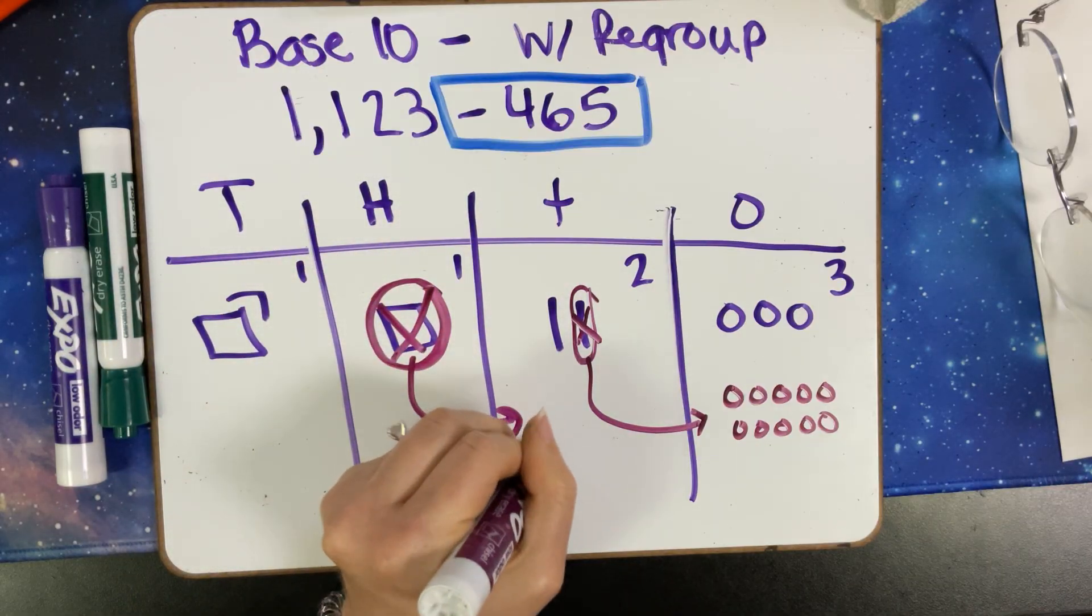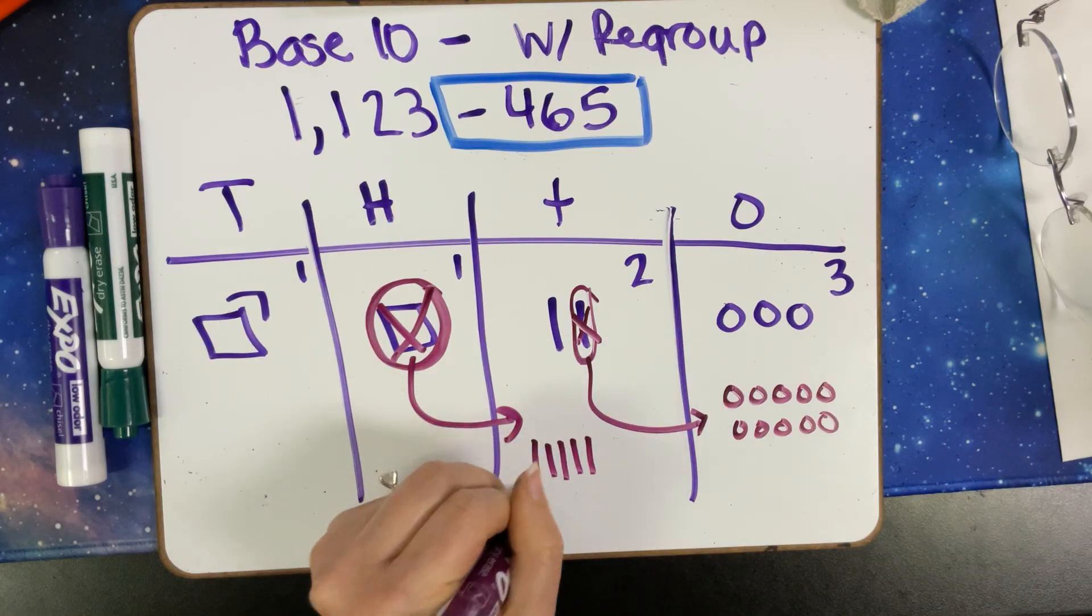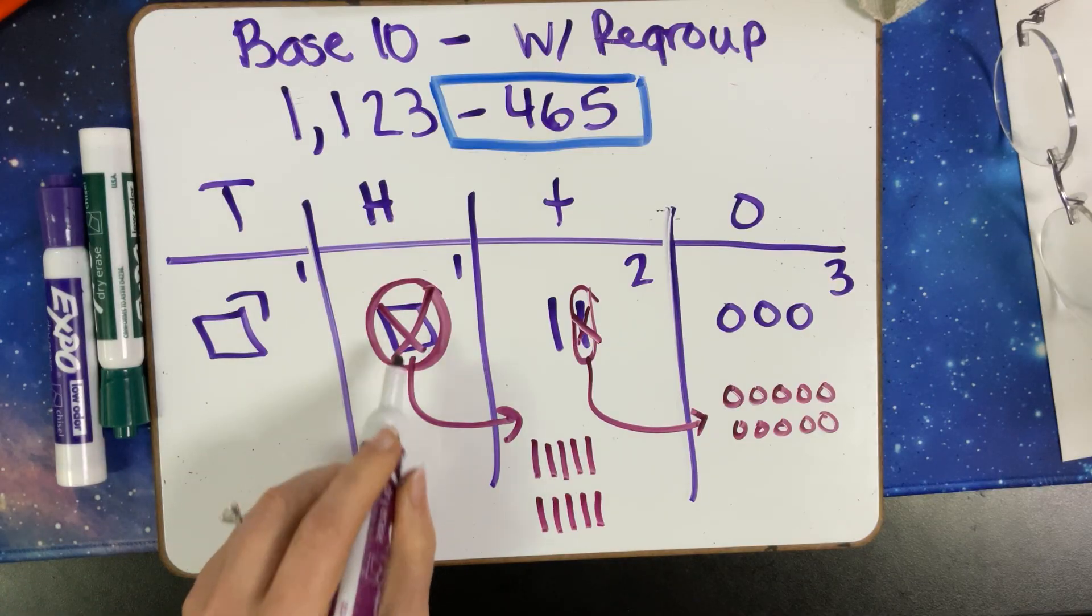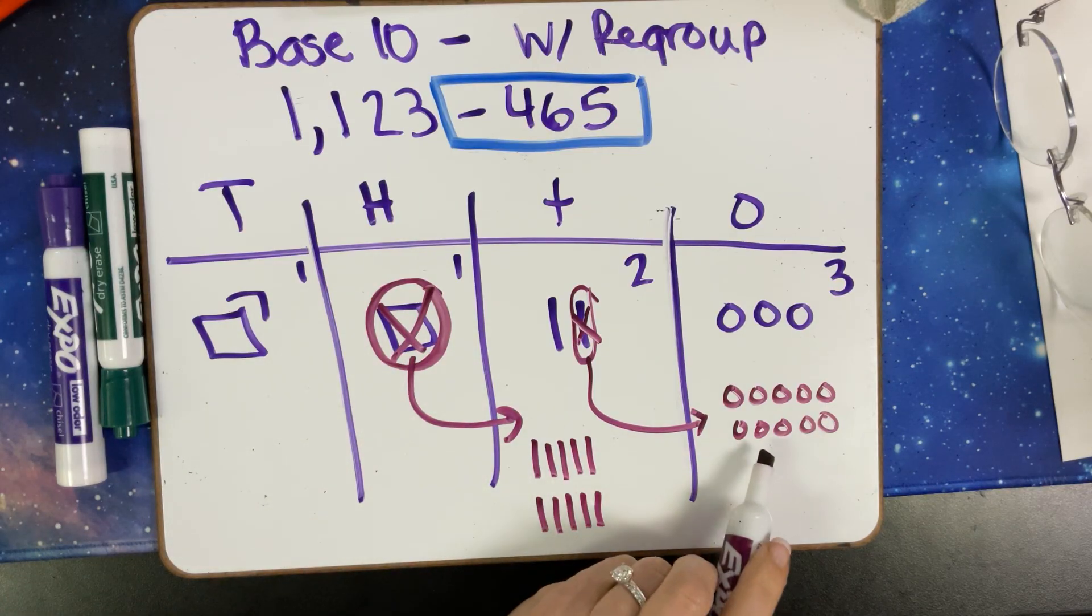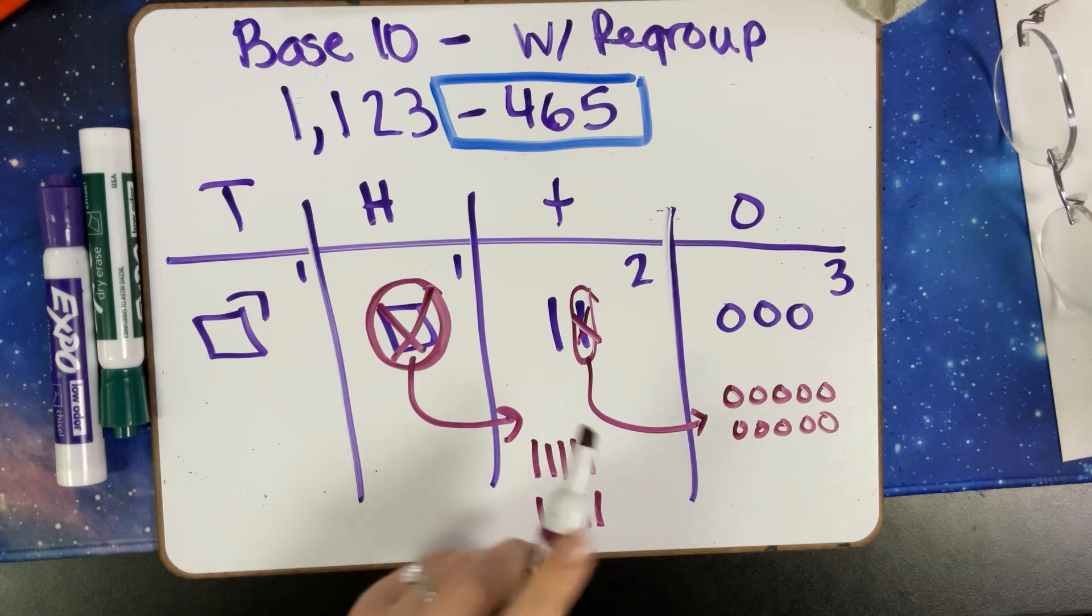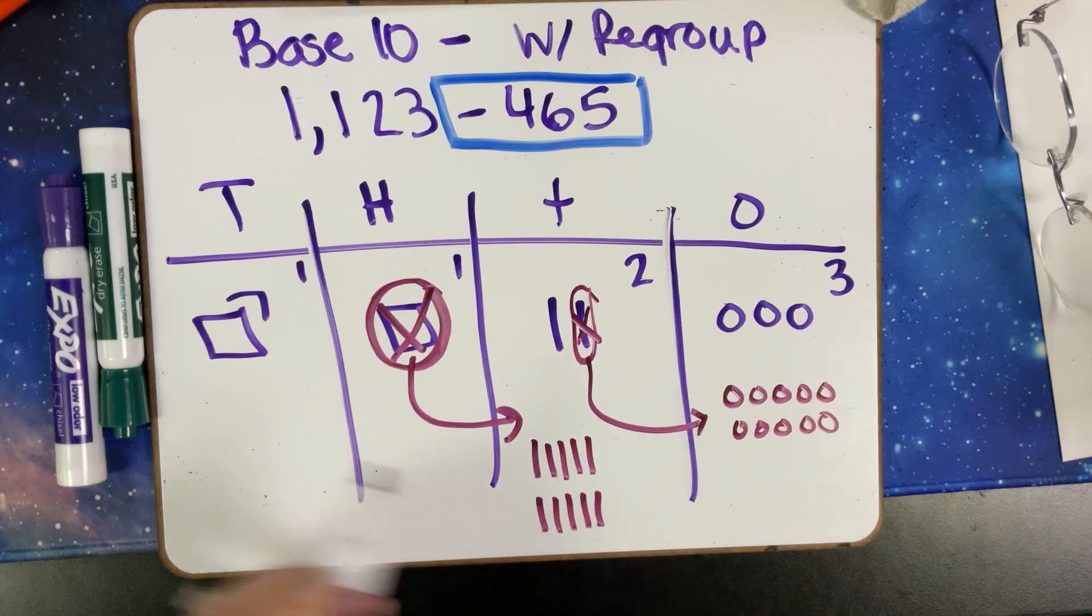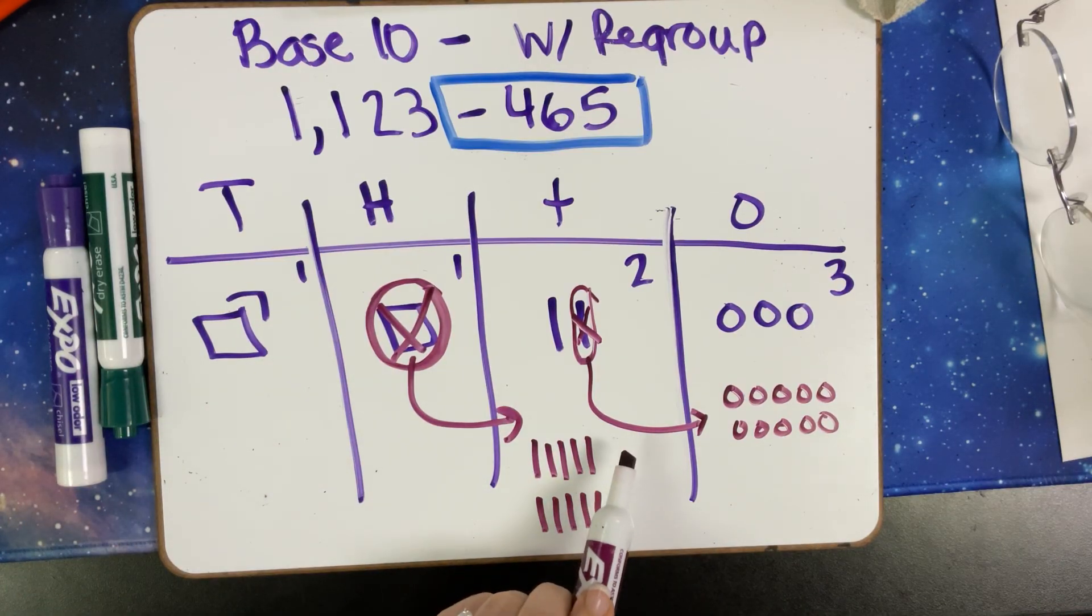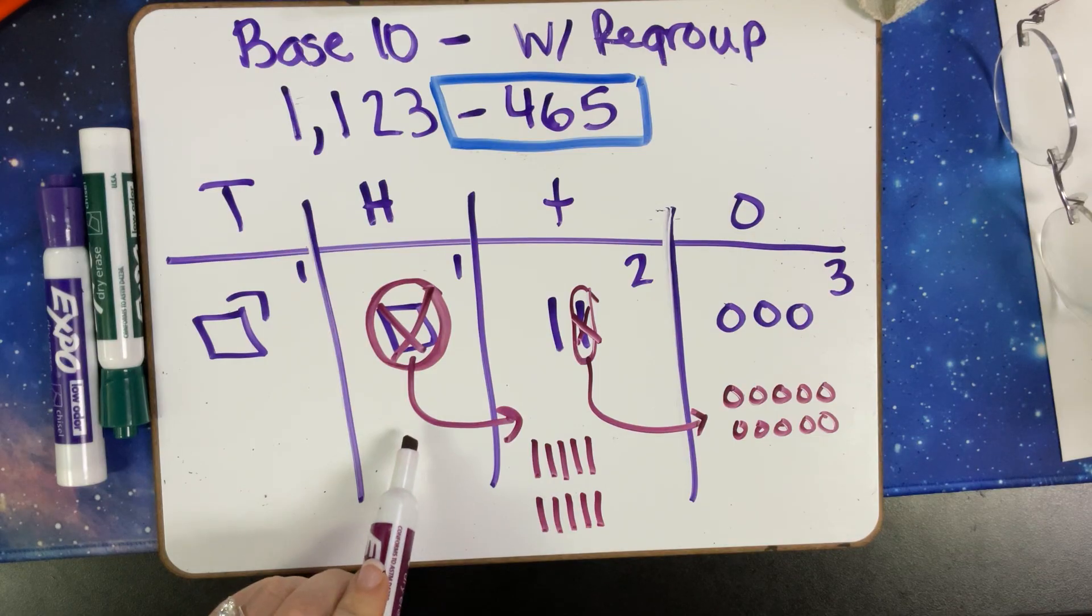That's 10, 20, 30, 40, 50, 60, 70, 80, 90, 100. They all have 10 pieces. So every time I regroup something, I will have a 10 where that's what you might remember as like put a 10 on top. That's what you're doing here. Now in my ones place I have 13, my tens place I have 11, and in my hundreds place I have zero.